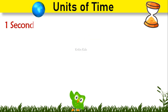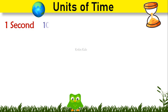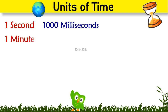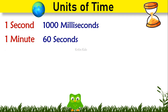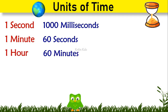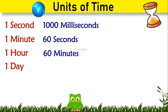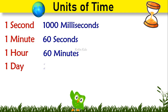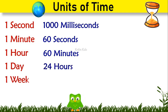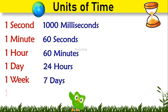1 second is 1,000 milliseconds. 1 minute is 60 seconds. 1 hour is 60 minutes. 1 day is 24 hours. 1 week is 7 days.